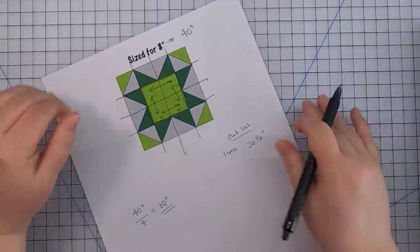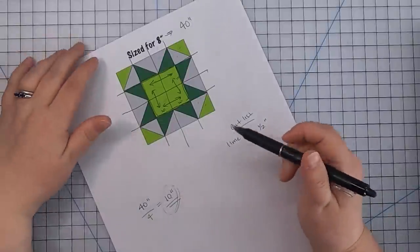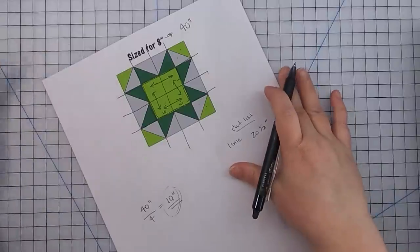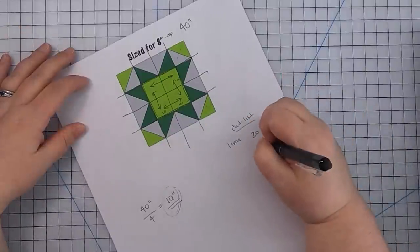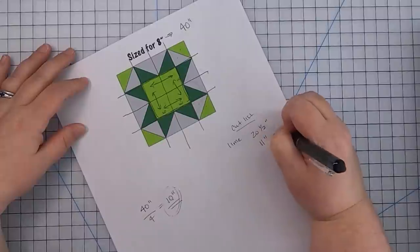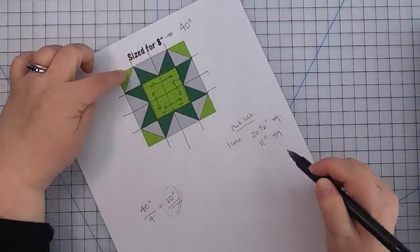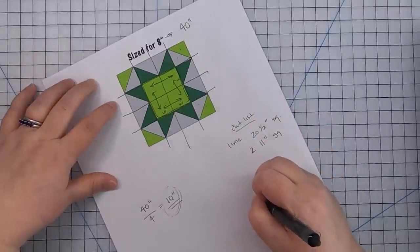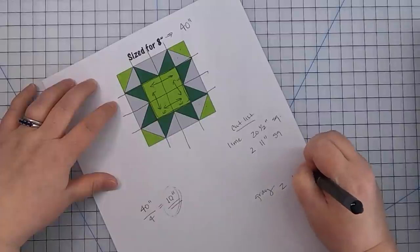So that takes care of this square. So now let's tackle these half square triangles around the corners of our block. We know that we want to have them finish at 10 inches because that's our key number. So to make two at a time half square triangles, we add an inch to the finished measurement. So I know I'm going to be cutting 11 inch squares. And I'm going to need two lime and I'm going to need two gray, two 11 inch squares.